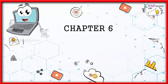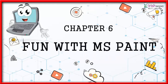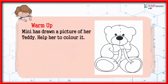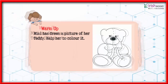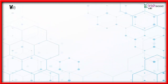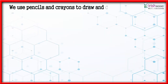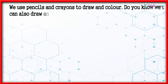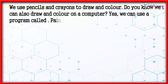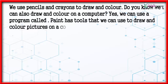Chapter 6: Fun with MS Paint. Warm up — Minnie has drawn a picture of her teddy. Help her to color it. We use pencils and crayons to draw and color. Do you know we can also draw and color on a computer? Yes, we can use a program called Paint. Paint has tools that we can use to draw and color pictures on a computer.